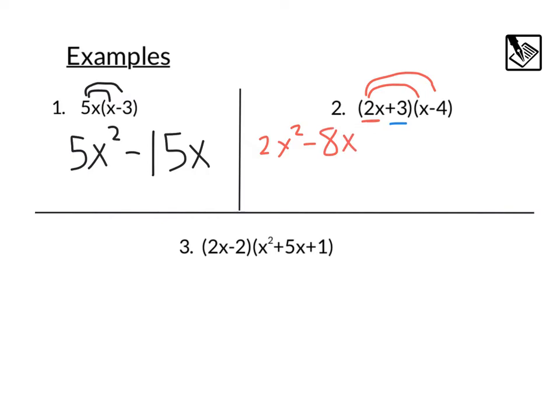That second term, 3, is going to also multiply to the x, giving us a plus 3x. And to the negative 4, giving us a minus 12. It looks like we can combine these like terms, the negative 8x and the 3x. That would give us a final answer of 2x squared. Negative 8 plus 3 is going to be a negative 5x. And then we've got that minus 12. And this would be our sum of 2x plus 3 times x minus 4, multiplying each term in the first by each term in the second.